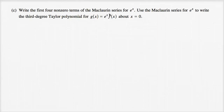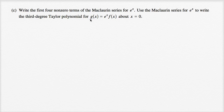Write the first four non-zero terms of the Maclaurin series for e to the x. Use the Maclaurin series for e to the x to write the third degree Taylor polynomial for g(x) = e^x times f(x), about x equals zero.